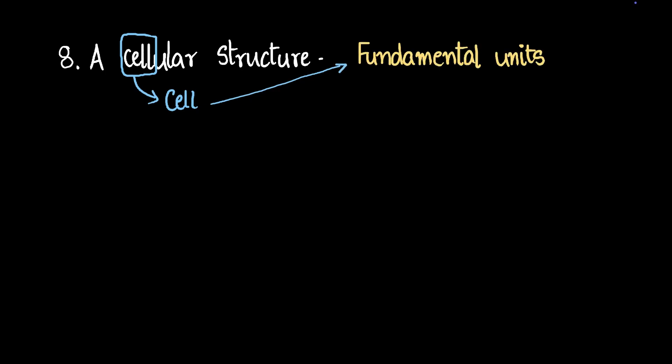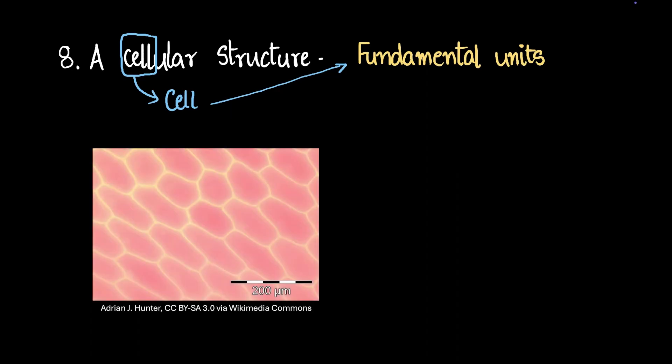If you zoomed into an onion peel, this is how it would look. Can you see these boundaries here like this? These are the boundaries to the cells. These are actually the cells of the onion peel.